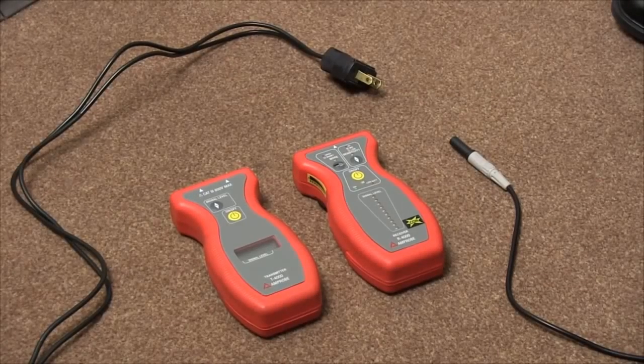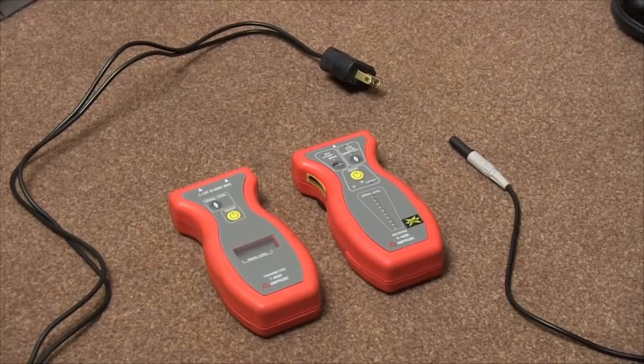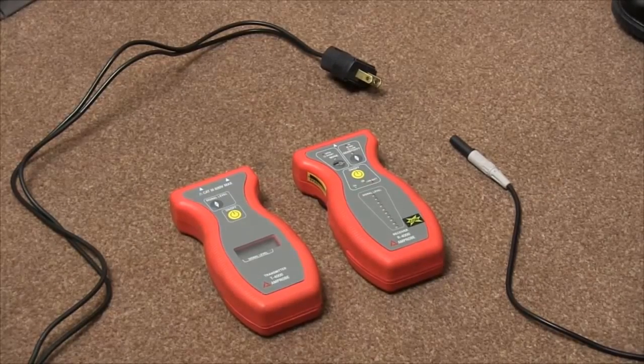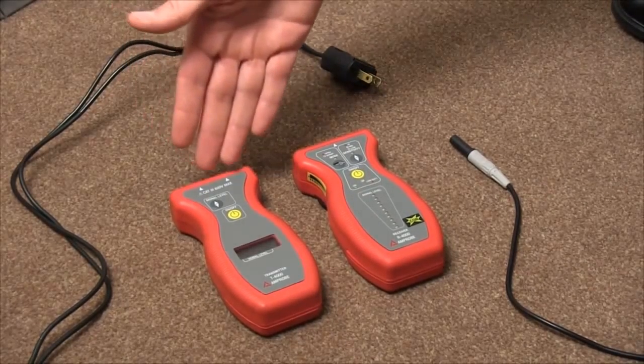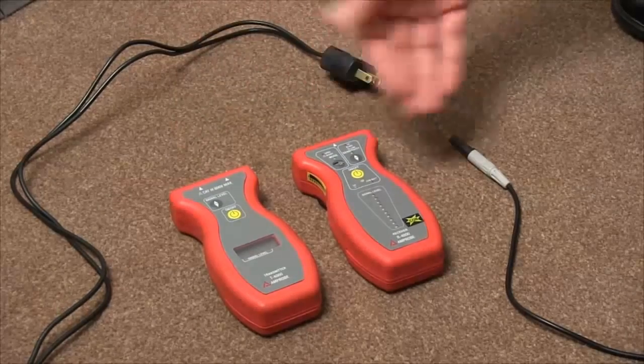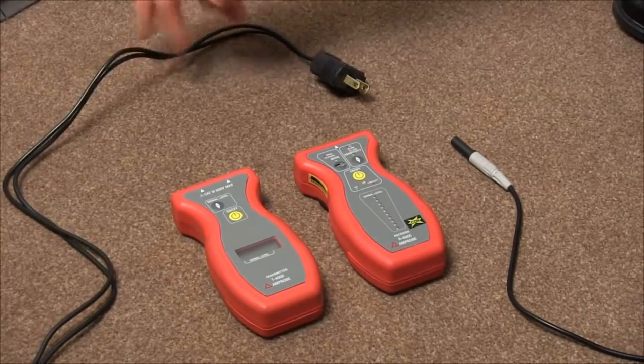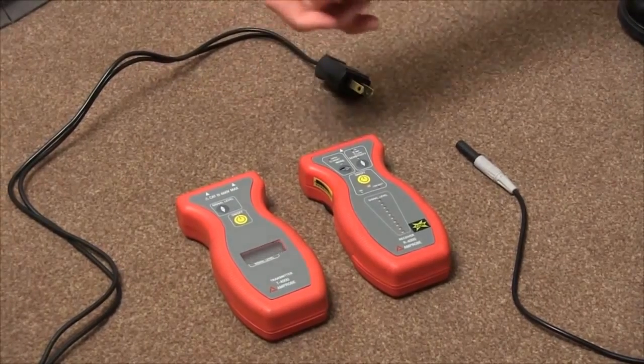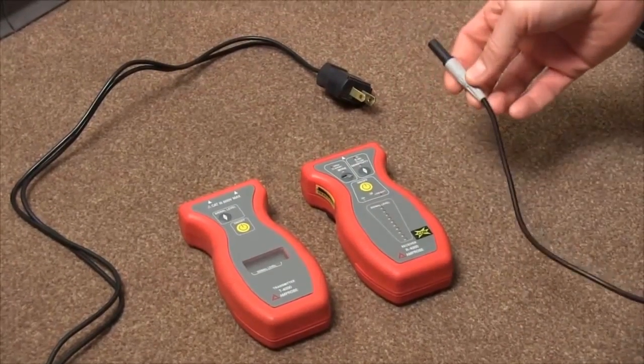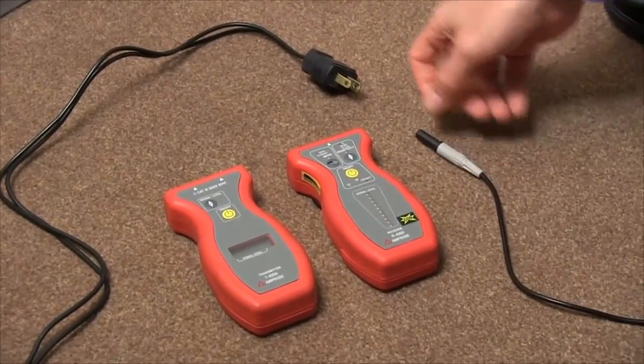Today we're talking about the Amprobe AT4000 wire tracer. This kit consists of a transmitter and a receiver, as well as an accessory plug to input electricity into the unit and a plug that acts as a grounding unit.